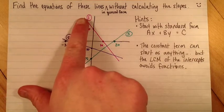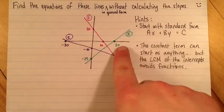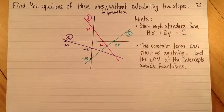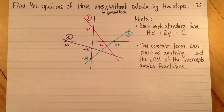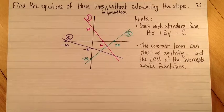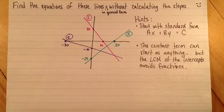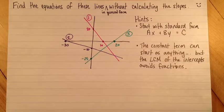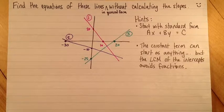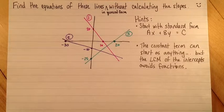This question says, find the equations of these lines in general form without calculating the slopes. This isn't an absolutely critical skill to have. You have to be able to find the equation of a line in general form, but you can totally do it by using slope-intercept form or slope-point form first and then converting.